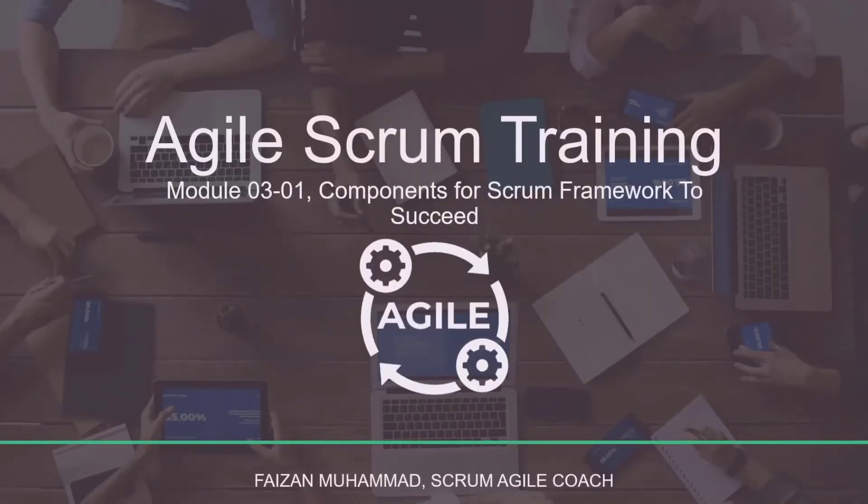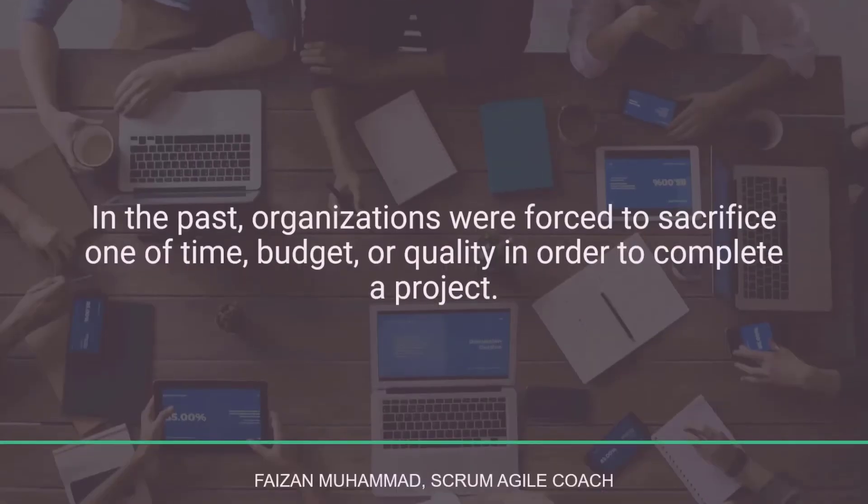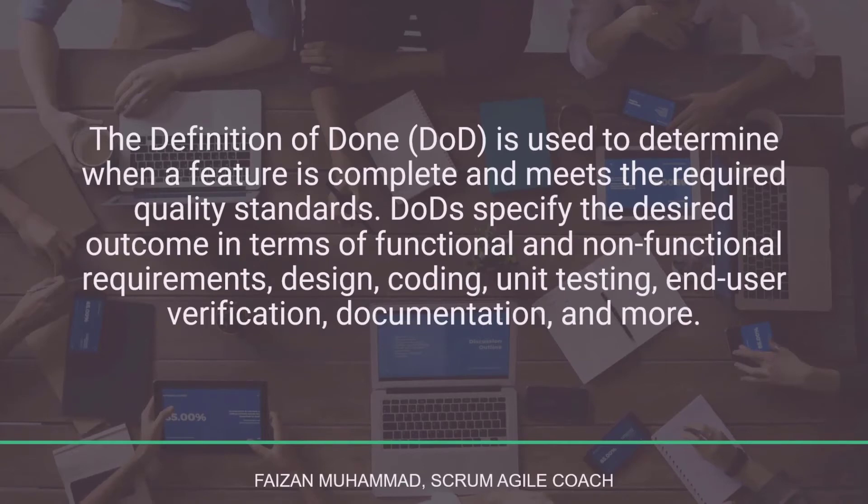In this section we'll be talking about the scrum roles and the scrum team. The scrum framework is revolutionizing the classic triangle of project management. In the past, organizations were forced to sacrifice one of three things: budget, time, or quality. However, with scrum, a new triangle emerges between budget, time, and functionality — and none of these elements have to be compromised. Quality is no longer optional. The Definition of Done (DOD) is used to determine when a feature is complete and meets required quality standards.